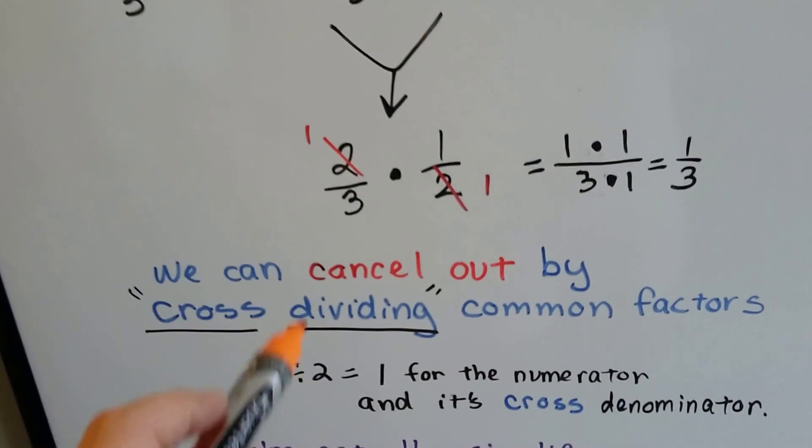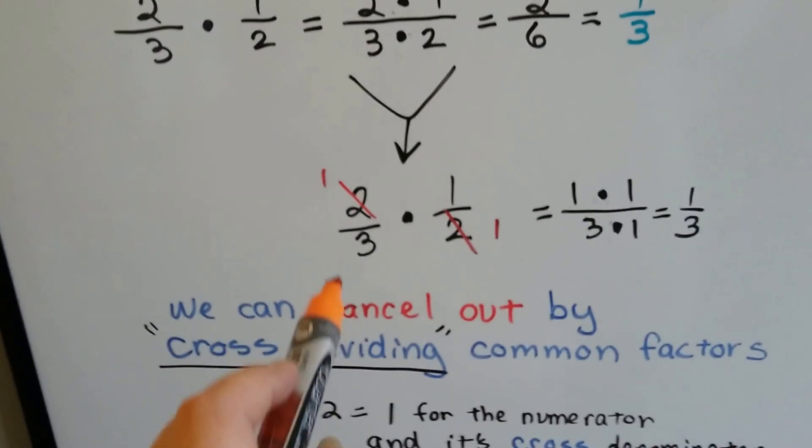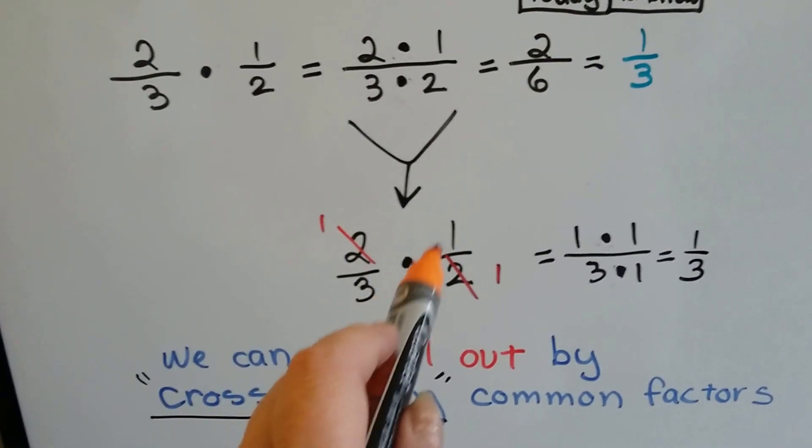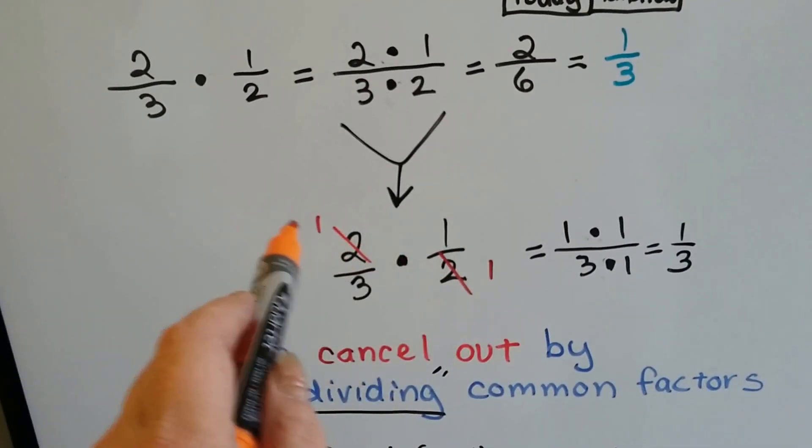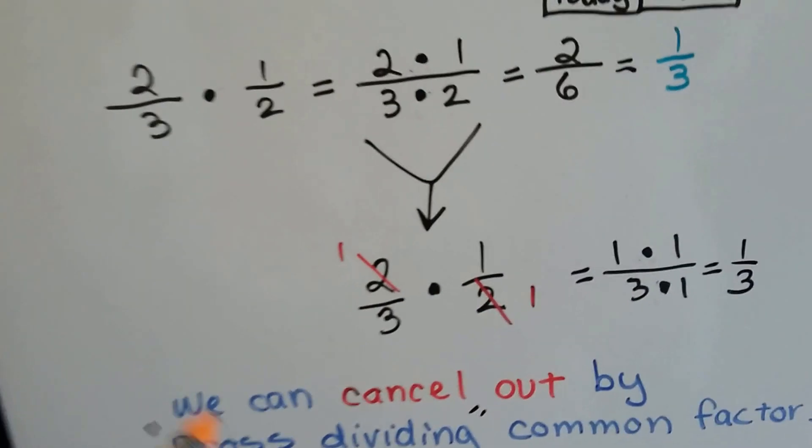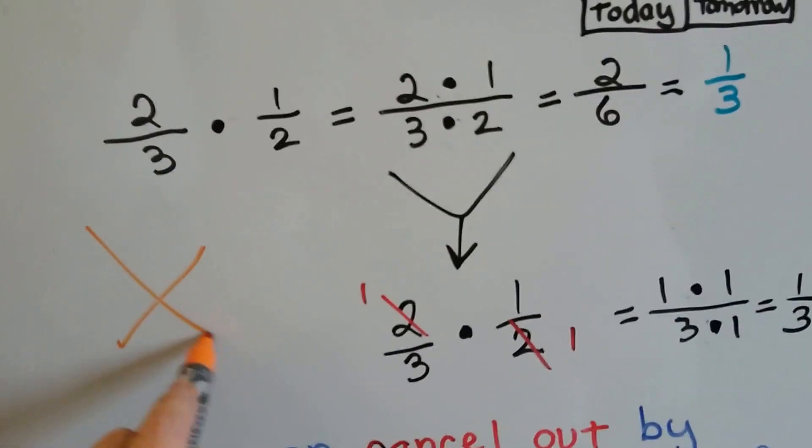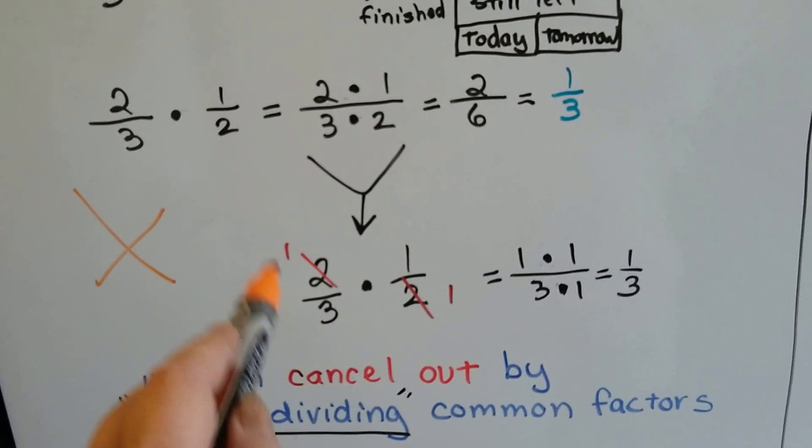The other way we can do it is we can cancel out by cross-dividing common factors. If we have two-thirds times one-half, we look at the crossways, not straight across. These are cross-canceling out. I want you to think of canceling out as canceling it out with an X. Because that's how we do it. We do it crossways.